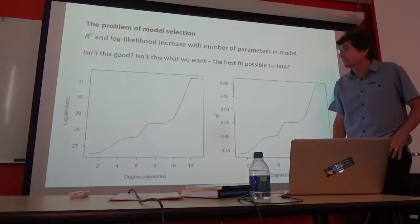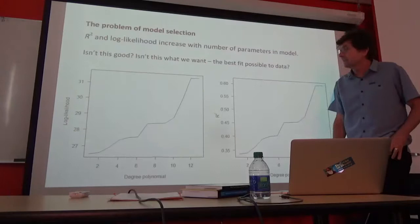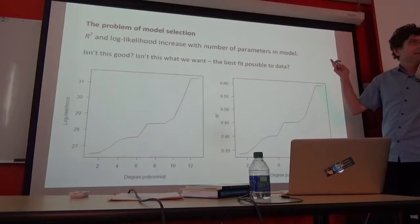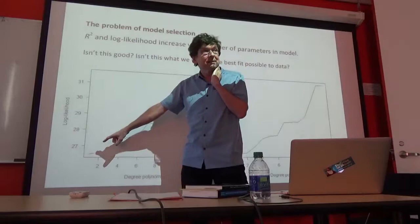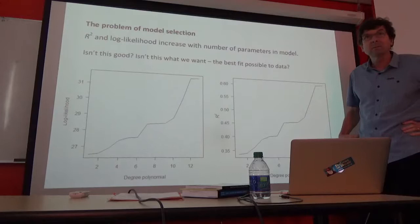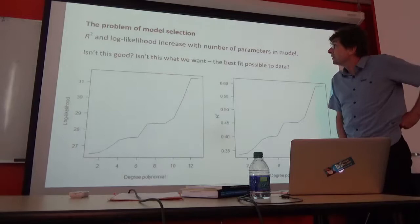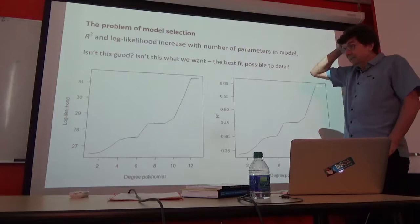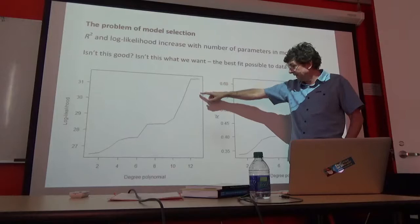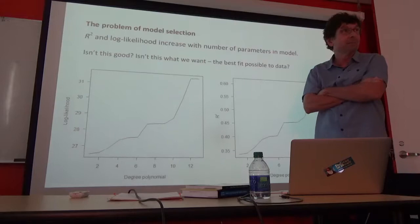Are you impressed? I was. For each of the models I fit, starting with a straight line — a first-order polynomial — all the way to a 13-degree polynomial, I tracked the R-squared, and the fit just gets better and better and better. Not only that, I calculated the log-likelihood assuming a normal distribution of error, and the log-likelihood also improves the more complicated we make the model — the more higher-order terms we include. If all we want to do is fit the data, we're done at around 13, because that's when we run out of data points. We can't fit more terms than there are data points — that's just an upper limit.